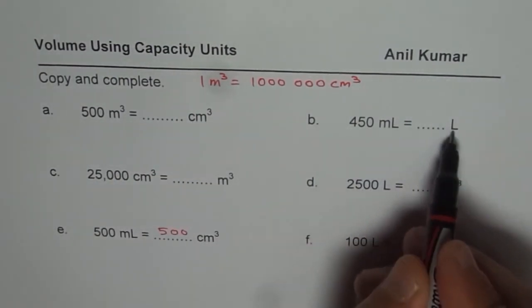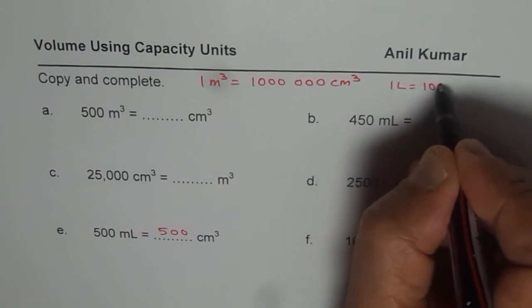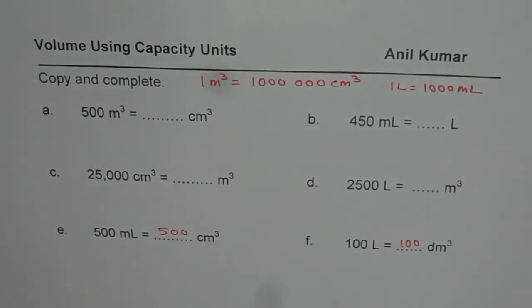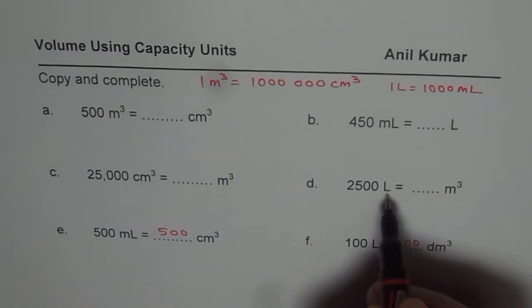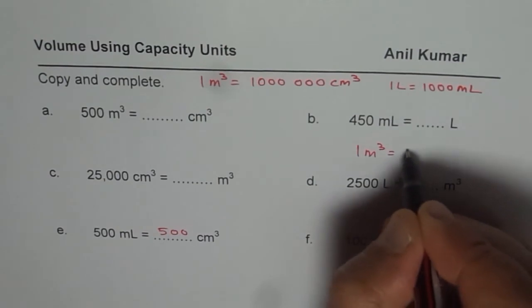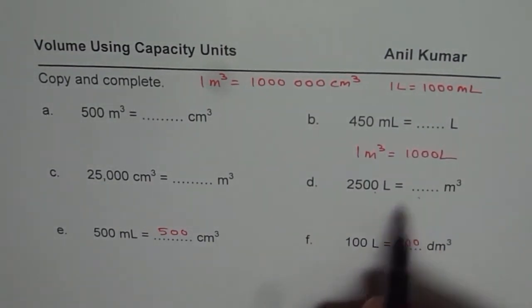As far as milliliters and liters is concerned, we know one liter is thousand milliliters. You can use this relation to find the answer, right? How about liters and meter cube? One meter cube is equal to one thousand liters. Use this relation to get the answer.